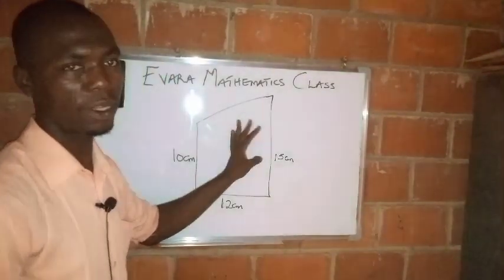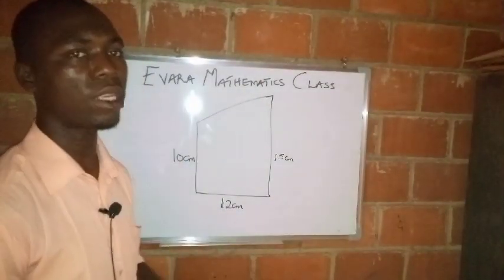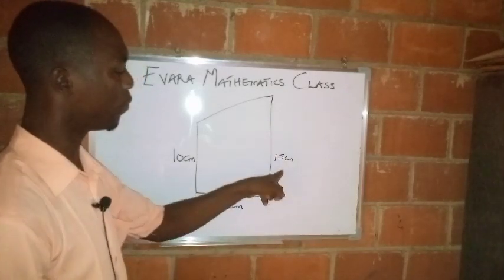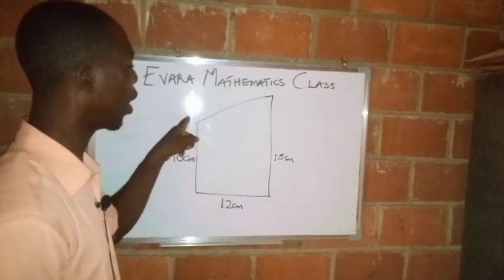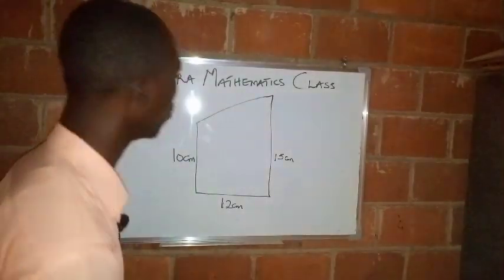We have to find the perimeter of this trapezium. Perimeter is the distance around a shape, which means we are to add 15, 12, 10, and the value of this side. First of all, we need to get the value of this side.